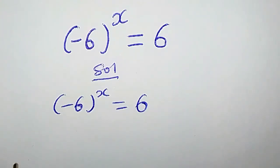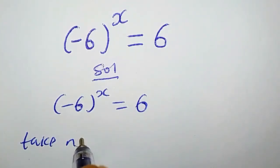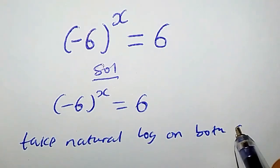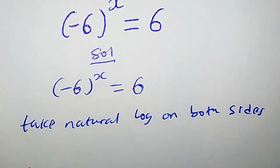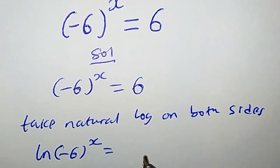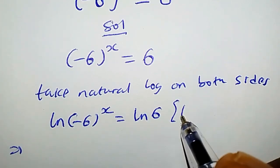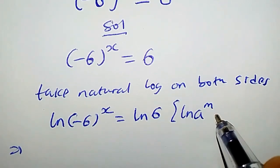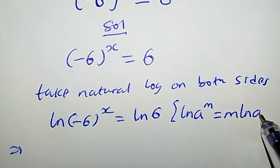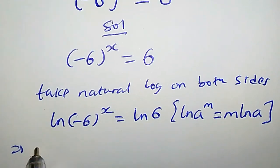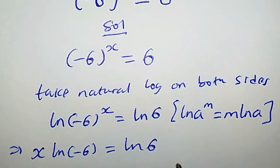The first thing we are going to do is take the natural log of both sides. Doing that, we have ln(−6^x) = ln(6). Recall that ln(a^m) = m·ln(a). Applying this property, we have x times ln(−6) = ln(6).